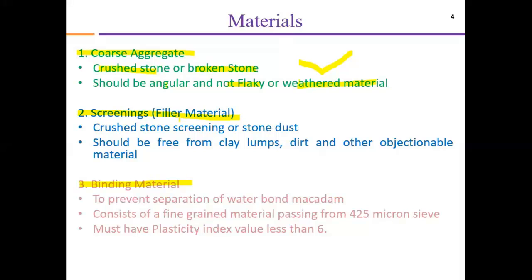Screening material, also known as filler material, is crushed stone screening or stone dust which we use to fill the voids among the coarse aggregate. It should be free from clay lumps, dirt, and other objectionable material like vegetable or animal decayed matter. If clay lumps or dirt are present inside the filler material, it will change its engineering behavior and it will not function as an ideal screening or filler material.